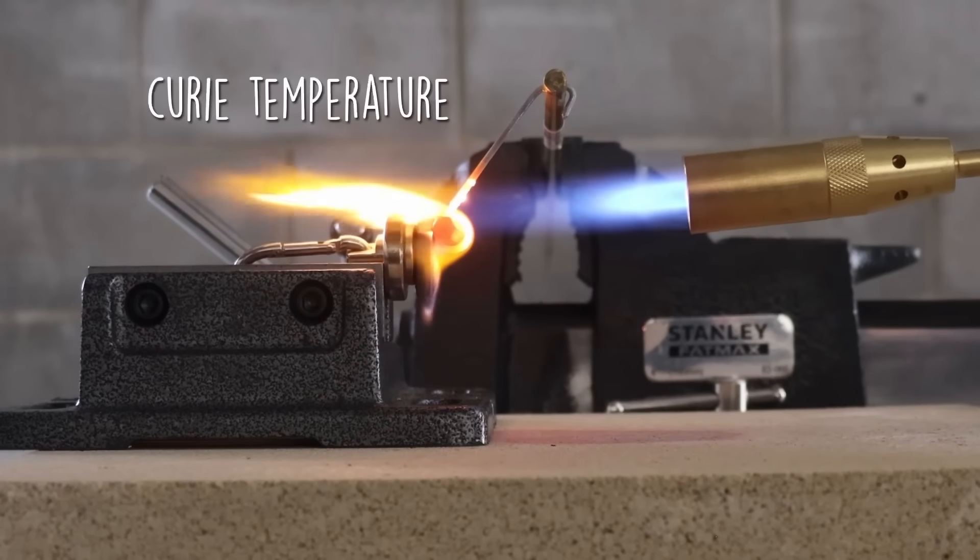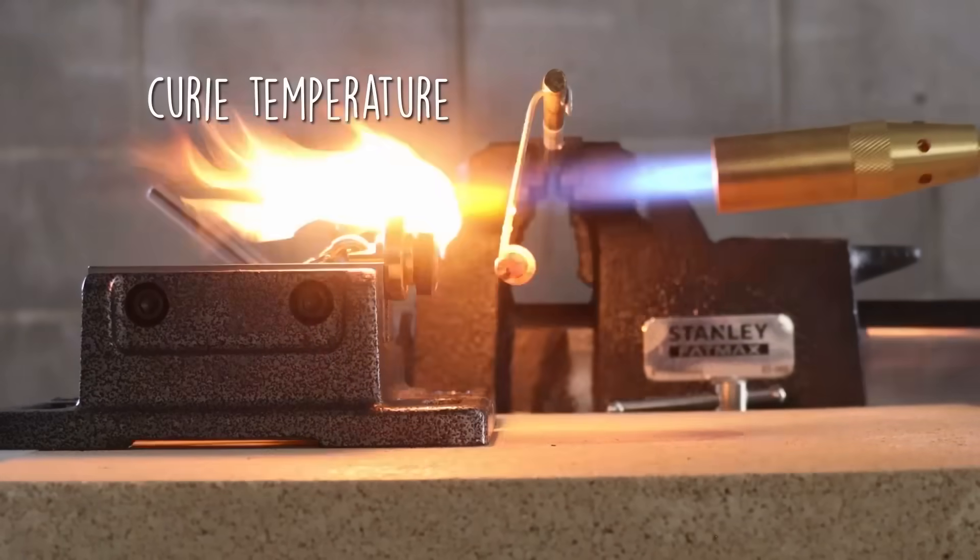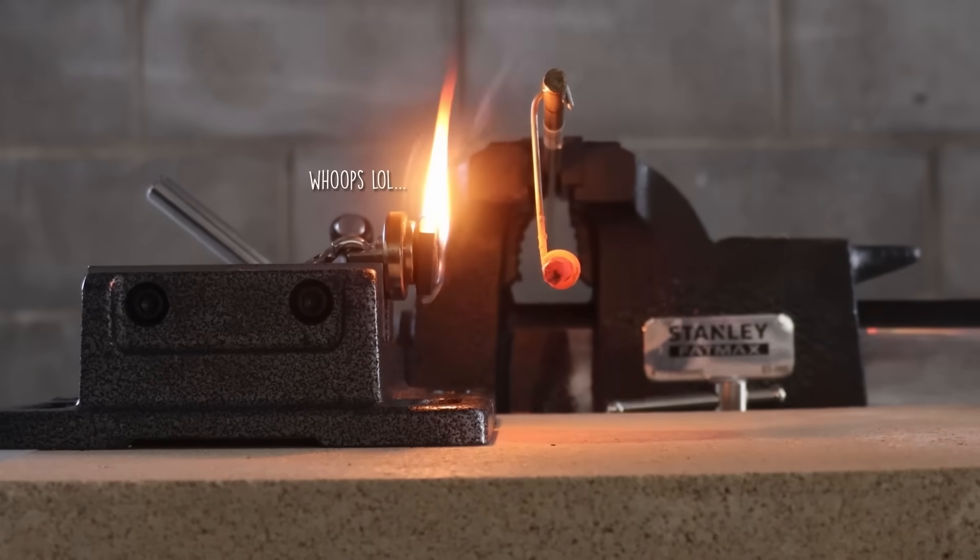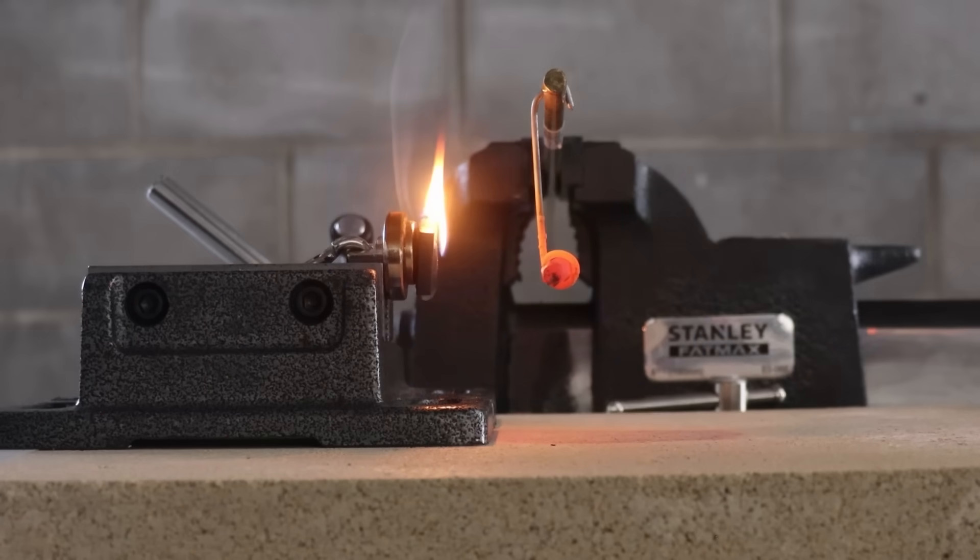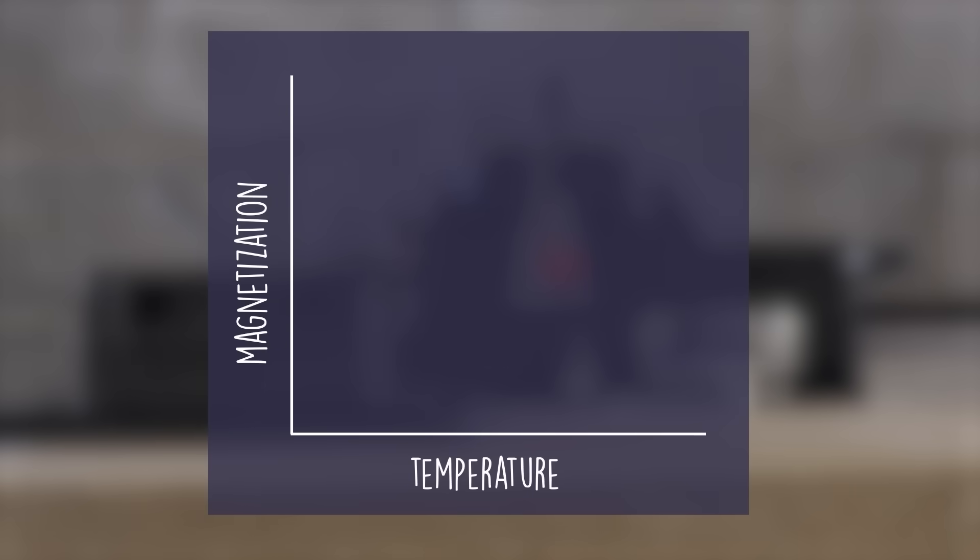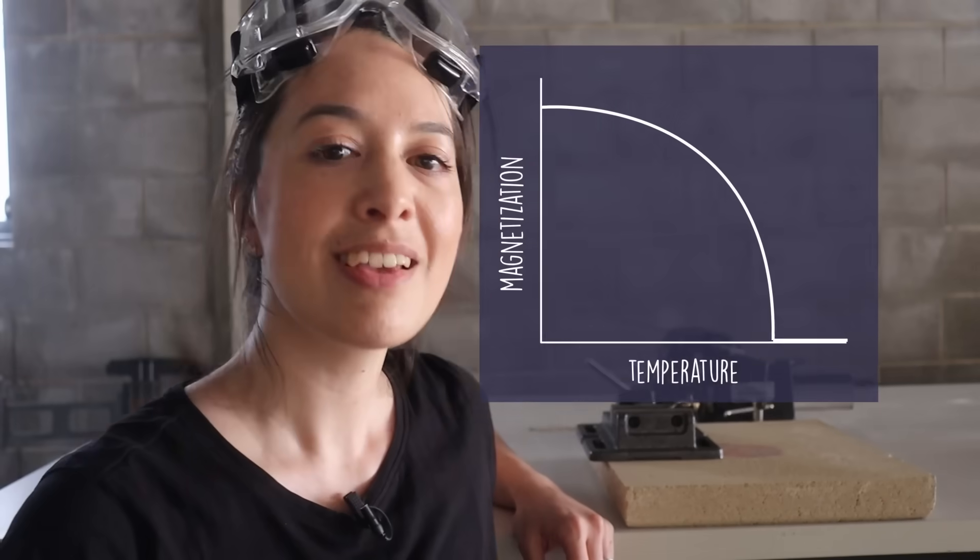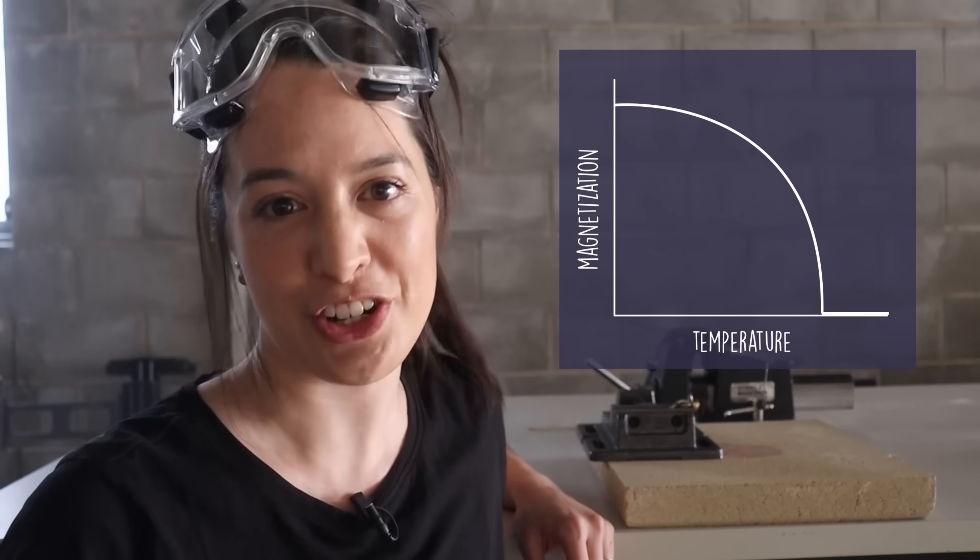But something interesting happens when we heat it up. At a threshold temperature called the Curie temperature, it suddenly loses its magnetization. Or in physics talk, it undergoes a sudden transition from a magnetic phase to a non-magnetic phase. If we plot how the magnetization behaves when temperature increases, we get a graph that looks like this. You can see the sudden drop-off of magnetization. This is called a phase transition.